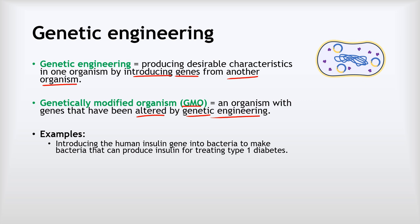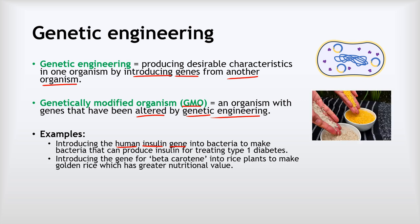Some examples: a number of you will have type 1 diabetes and need to inject insulin regularly — that insulin is actually produced by genetic engineering. The human insulin gene has been introduced into bacteria, so those bacteria can make human insulin, which we collect and provide to people with type 1 diabetes. Another example is that a gene for beta carotene has been introduced into rice plants to make what we call golden rice, which has greater nutritional value than regular rice.